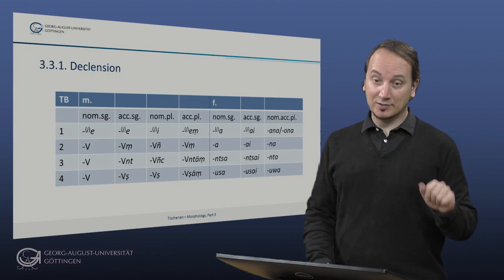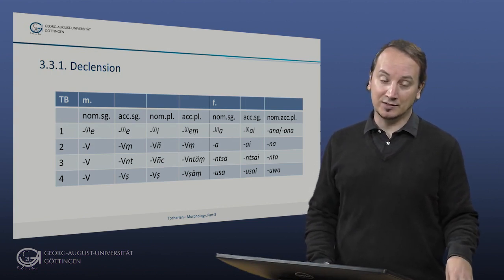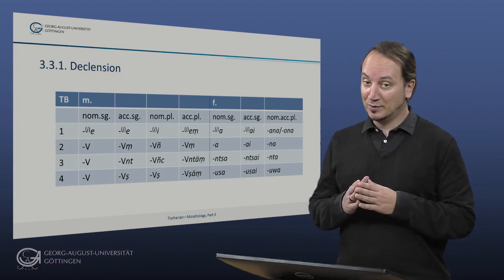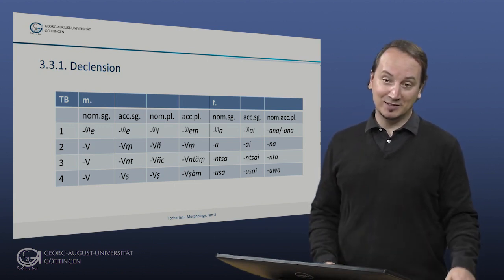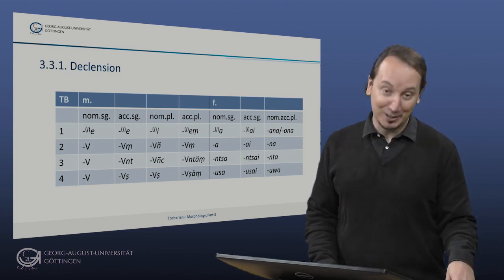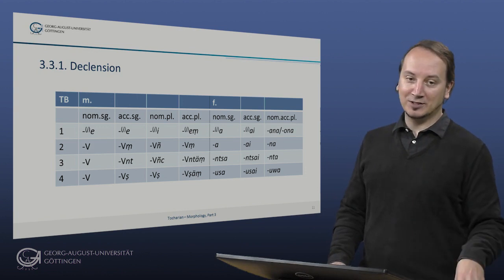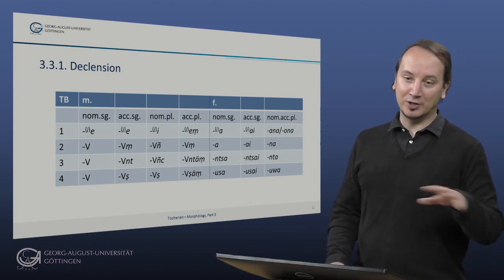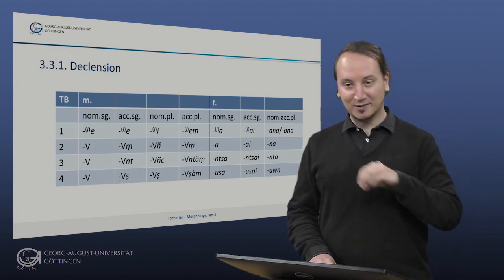So here is a structural overview again of the four Tocharian B adjective classes. We're only dealing with Tocharian B here because the adjectival stem classes in Tocharian still have to be figured out. And the four Tocharian B adjective classes here can be further subdivided, which is not very important for us at the moment.